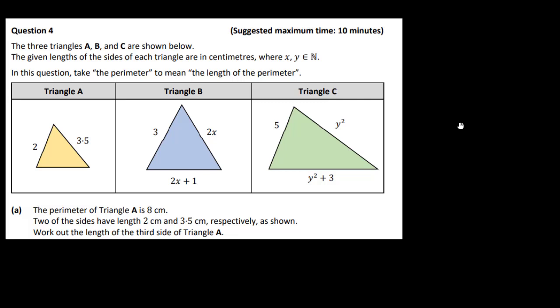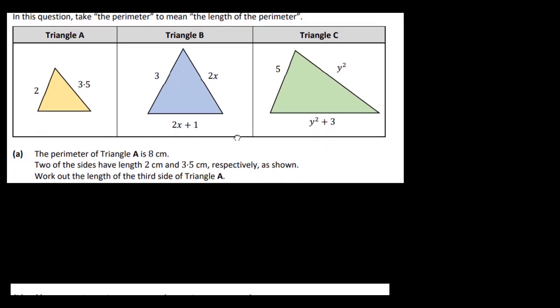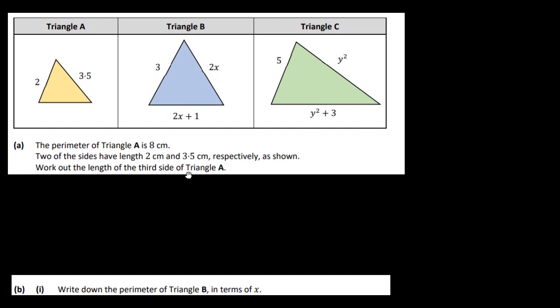The perimeter of triangle A is 8 centimeters. Two of the sides have length 2 centimeters and 3.5 centimeters respectively. Let the third side length equal L. Then 2 plus 3.5 plus L equals 8 centimeters. 5.5 plus L equals 8, so L equals 2.5 centimeters. That's the length of the third side.